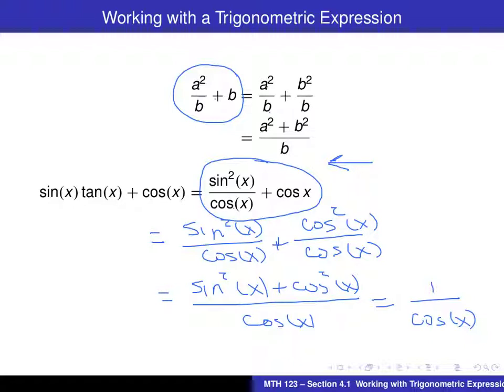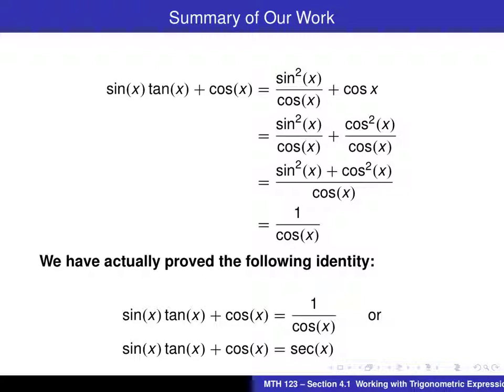So actually, we've probably done about as much as we can with this. Here's a summary of what we have done in our work. You can see it's basically exactly what we did. We rewrote the expression cos(x) as a fraction, combined these into a single fraction, and then used the identity sin squared of x plus cos squared of x equals 1. And finally ended up with 1 over cos(x). Actually, what we have proved at this stage are these two identities. We could also rewrite that because 1 over cos(x) equals sec(x). So, we have now proved our first trigonometric identity.